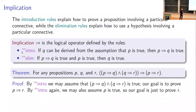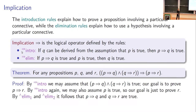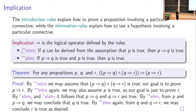Our goal is still to prove P implies R. So by the introduction rule for implication again, we can also assume P is true, and now our new goal is just to prove R. Our assumptions are P and P implies Q and Q implies R. By the elimination rule for AND, we have separately that P implies Q is true and Q implies R is true. And by the elimination rule for implication, we use P and P implies Q to conclude Q, and then Q and Q implies R to conclude R.